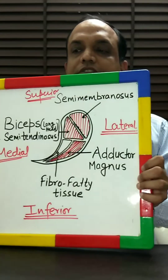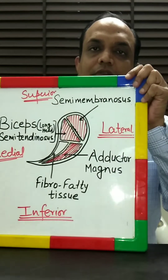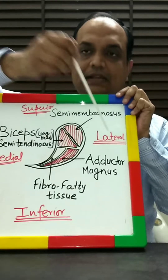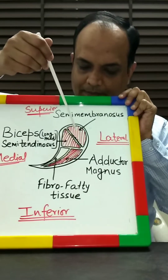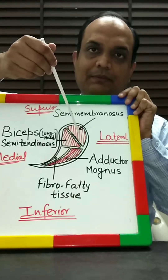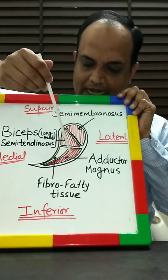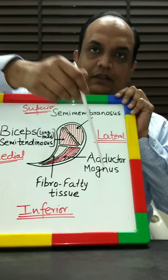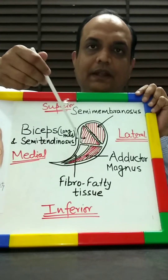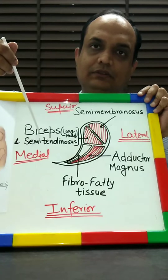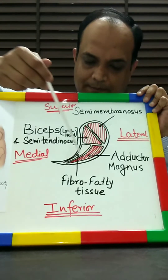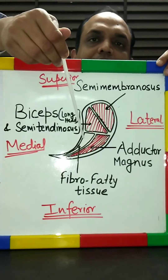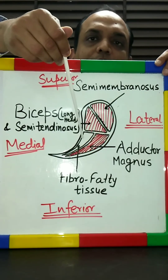In the enlarged view, the ischial tuberosity is divided into four parts: a lateral area and a medial area. The upper lateral part gives origin to semimembranosus, and the lower lateral part gives origin to adductor magnus. On the inner side, the upper part gives origin to semitendinosus and the long head of biceps. The lower inner segment is covered by fibro-fatty tissue — there is no muscle there.